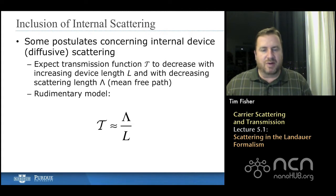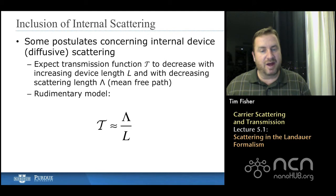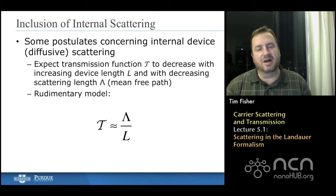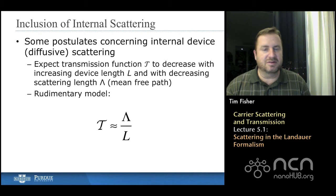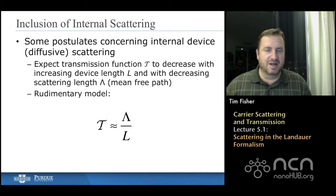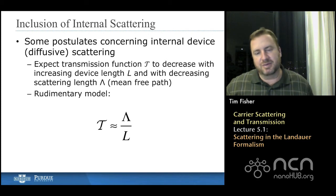And we would generally expect that the transmission probability, that's really what the transmission function is, at least if we're talking about a single type of carrier, would increase the longer the mean-free path is, and it would decrease the longer the device is. So we might make a quick postulate that the transmission function would be the ratio of the mean-free path to the device length. And that is simply intuitive. At this point in time, we're not proving anything.